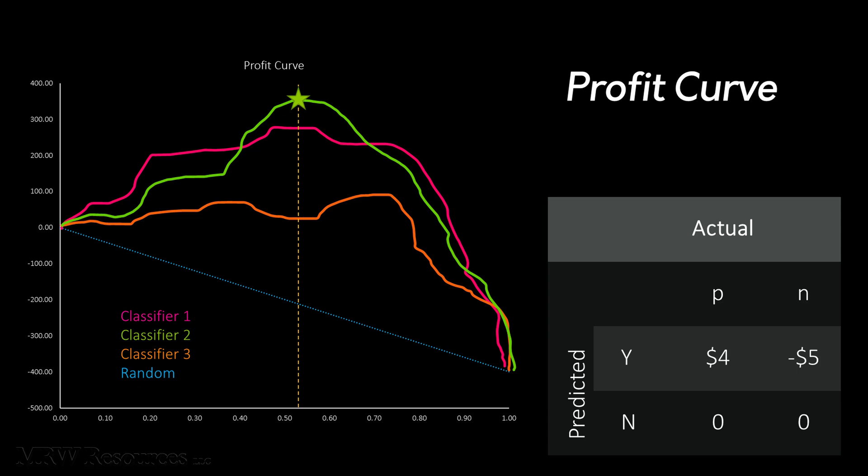If we look at our curve at the X equals 8% mark, we see that classifier 1 performs best. We would then score all 100,000 potential consumers with classifier 1, then send offers to the 8,000 with the highest scores. So, as you can see here,